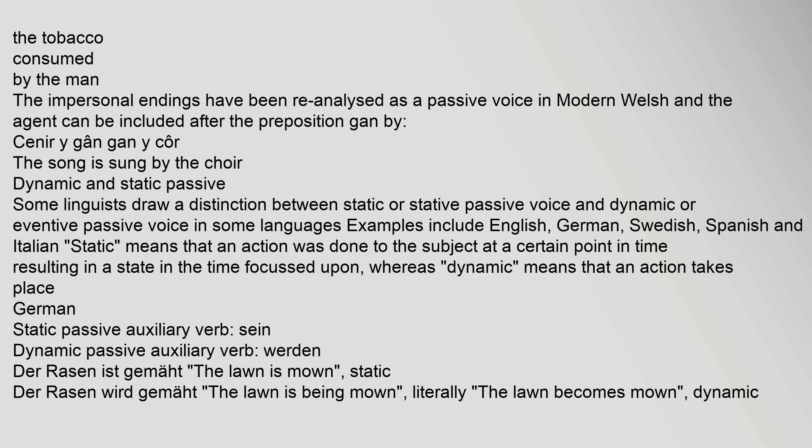Some linguists draw a distinction between static (stative) passive voice and dynamic (eventive) passive voice. In some languages — including English, German, Swedish, Spanish, and Italian — "static" means that an action was done to the subject at a certain point in time resulting in a state, whereas "dynamic" means that an action is taking place. In German, the static passive uses auxiliary verb "sein" (e.g., "Der Rasen ist gemäht" — The lawn is mown) while the dynamic passive uses "werden" (e.g., "Der Rasen wird gemäht" — The lawn is being mown).